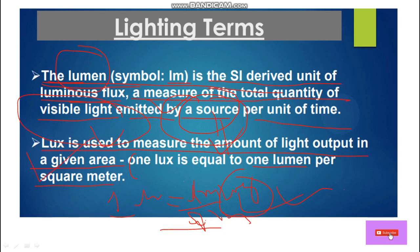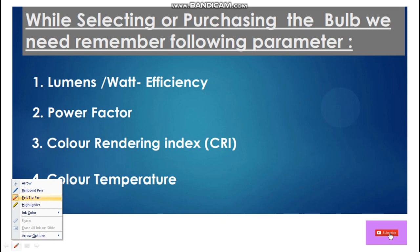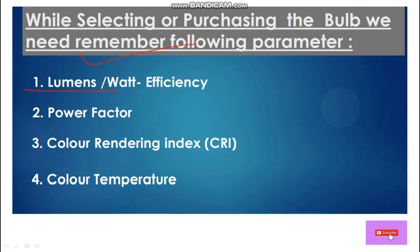We have different lux levels for different areas as per standard. When we are going to select or purchase a light fixture, we have to consider the following parameters: lumens per watt — which is the efficiency of the light fixture — then power factor level, then CRI value which is Color Rendering Index, and then color temperature.